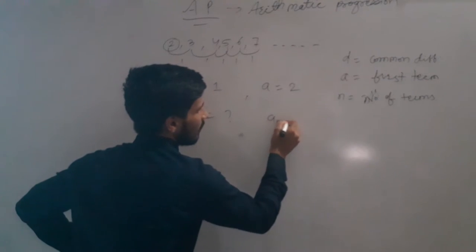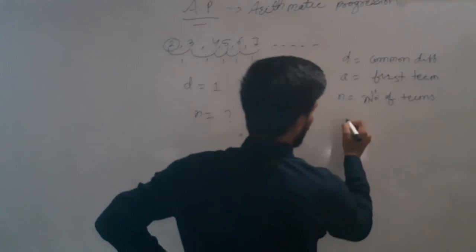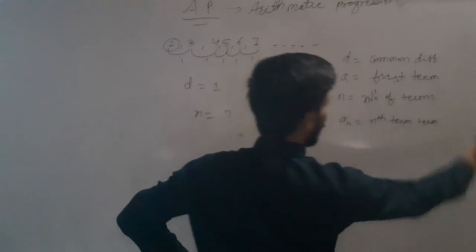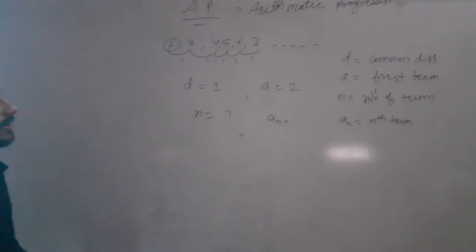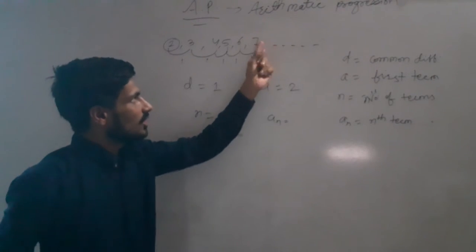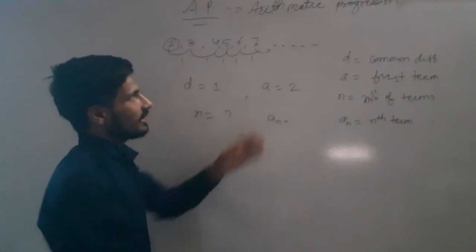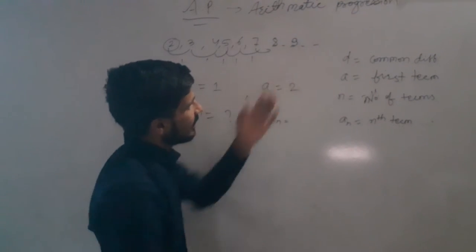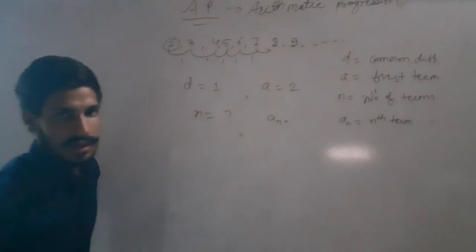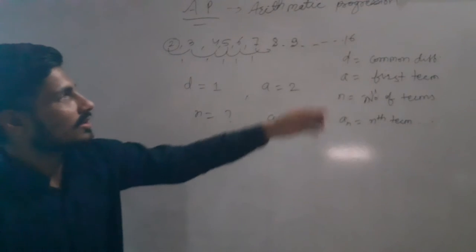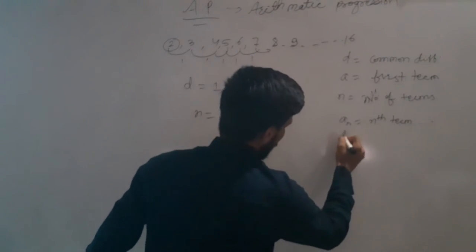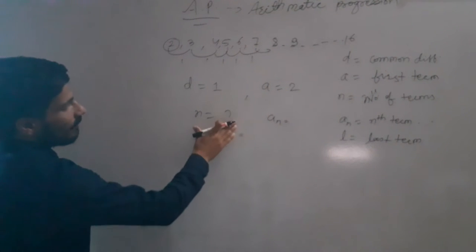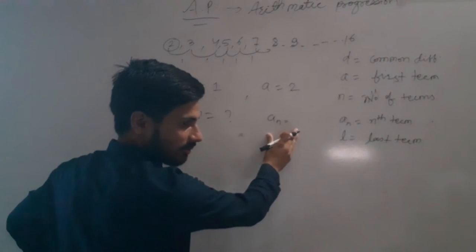AN means the nth term. We can also find the last term — for example, after 7 we get 8, and the sequence closes at 9. If the last term is 16, it is denoted as L. L is the last term. So we can find AN, the nth term, or L, the last term.